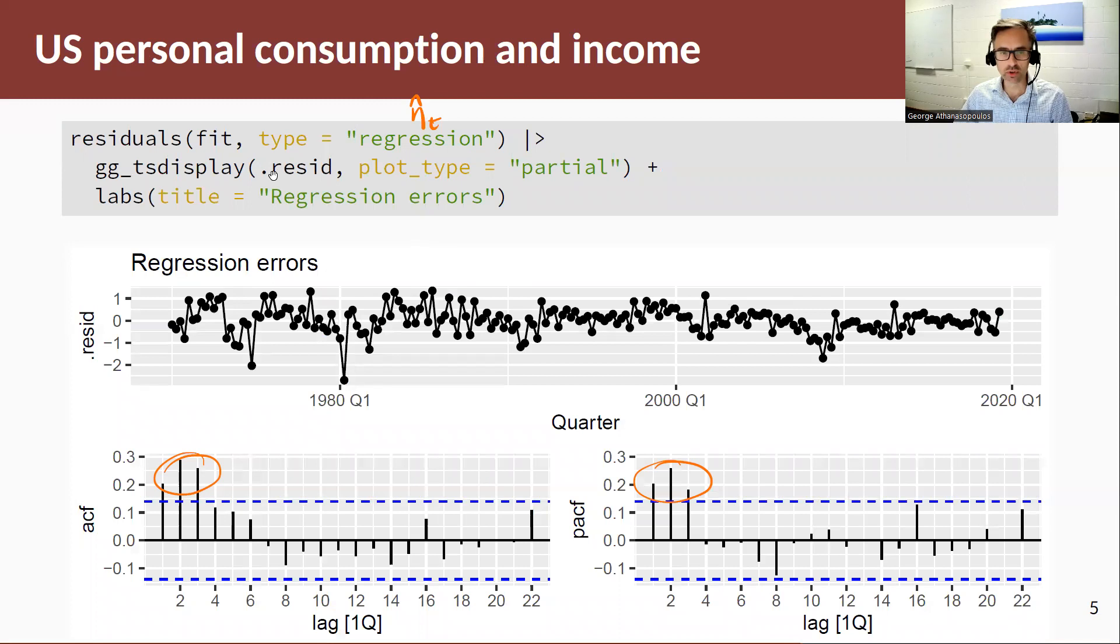If we have a look at the residuals using the residual function and we specify that we want to look at the regression residuals, that's the estimated epsilons, and we look at this plot, we can see by looking at the time plot that these are not randomly scattered around zero, so we expect some autocorrelation. And that is obvious when we look at the ACF and the PACF, and this can help us choose an order of the AR and the MAs if we want to, if we didn't want to let Fable do that for us.